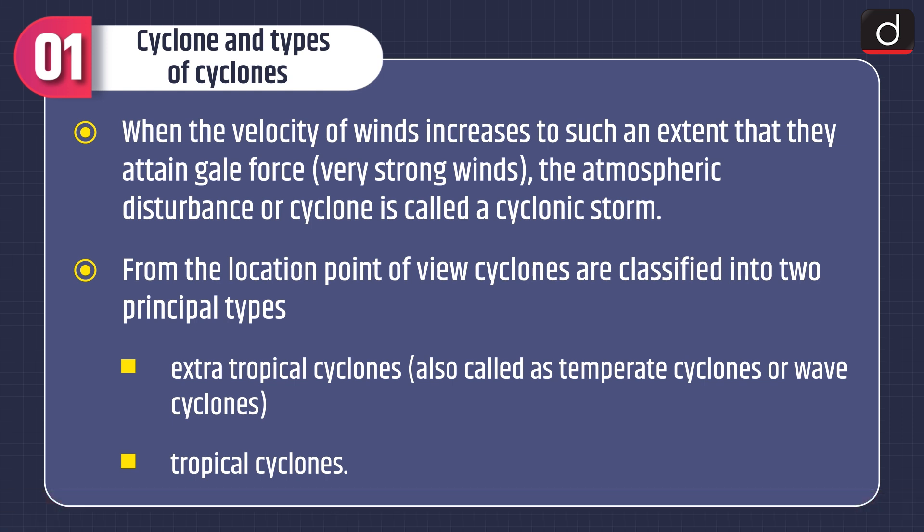From the location point of view, cyclones are classified into two principal types: extra tropical cyclones, also called temperate cyclones or wave cyclones, and tropical cyclones.